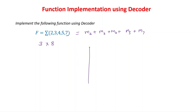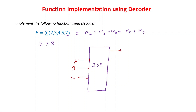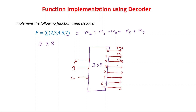If we draw the 3×8 decoder, three input lines are required and eight output lines are required. Input lines are A, B, and C. Output lines are D0, D1, D2, D3, D4, D5, D6, and D7. D0 through D7 represent min terms M0 through M7 respectively.